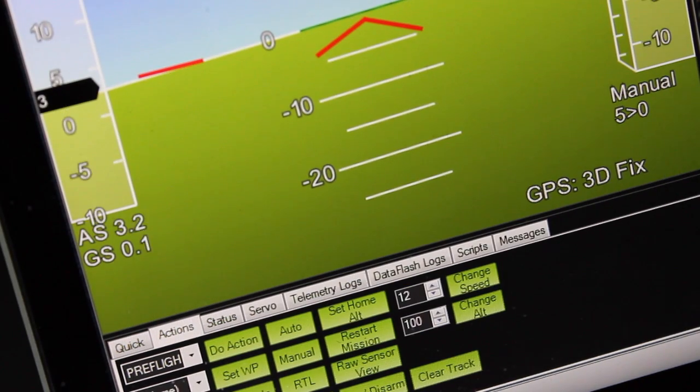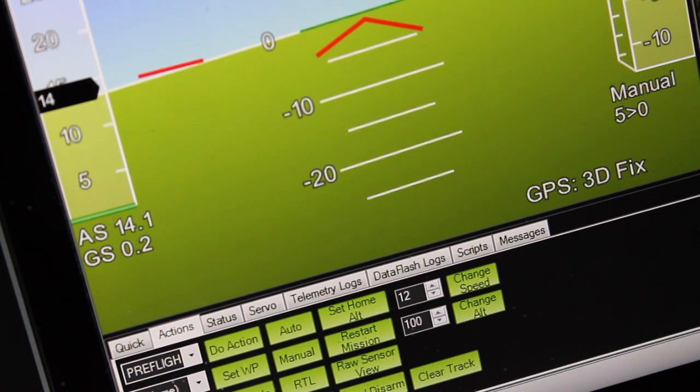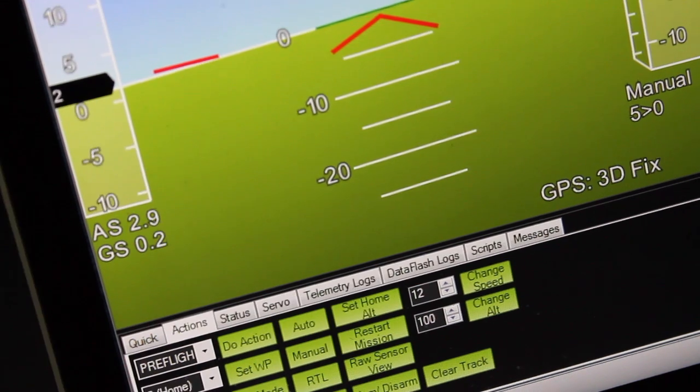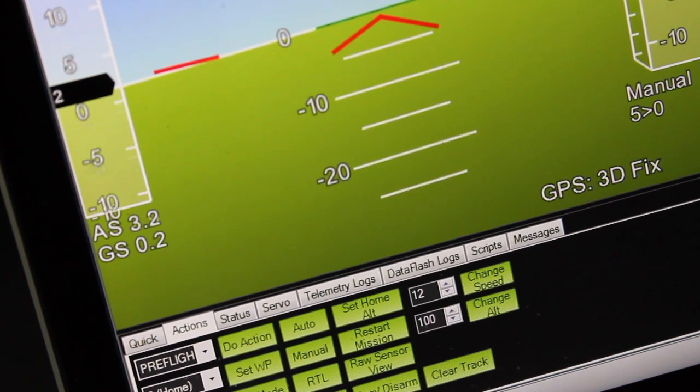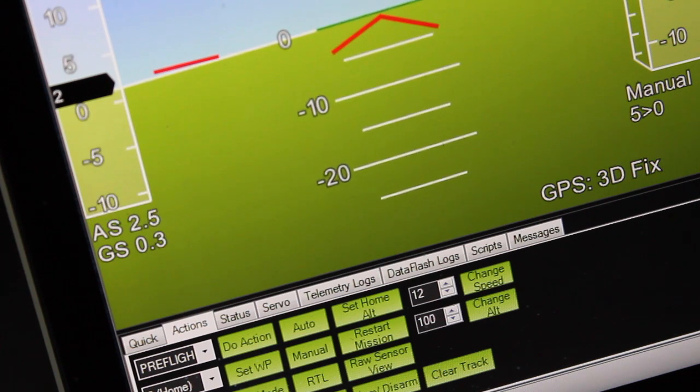But that being said I'm going to go ahead and blow on this pitot tube and we'll see this airspeed value change which shows us that the sensor is actually working. And you saw those values get up to almost 20 meters per second so our airspeed sensor is working properly.